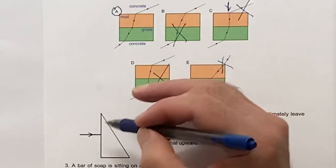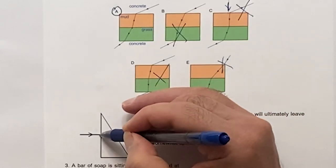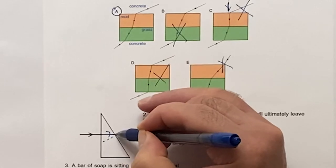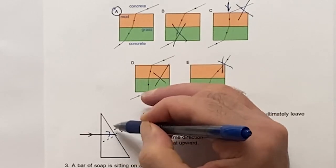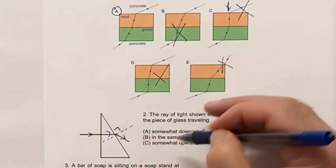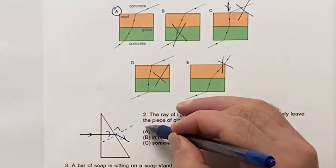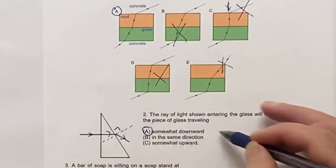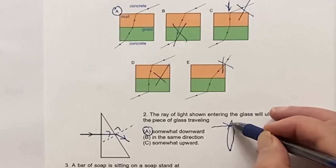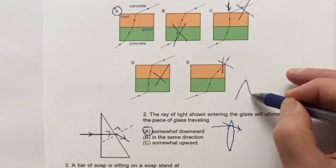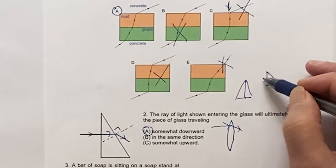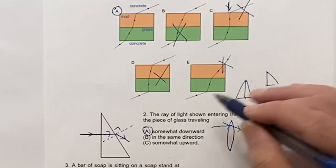For this case, since this is normal incidence, the ray goes straight in. Then if you draw the normal perpendicular to the surface, you're going to bend away from the normal, so somewhat downward. You might remember the converging cut — even if you cut that in half, you'd still have a converging cut, like a converging lens.